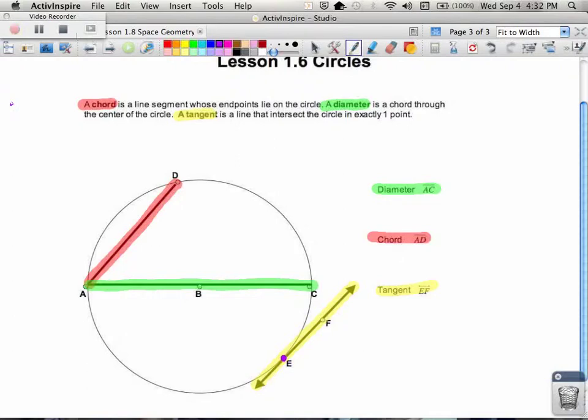So three different kinds of straight things that are inside the circle that are of significance: a chord, a diameter which is a special chord, and a tangent. Remember that tangents are on the outside and they intersect in exactly one spot. These are outside of the circle.